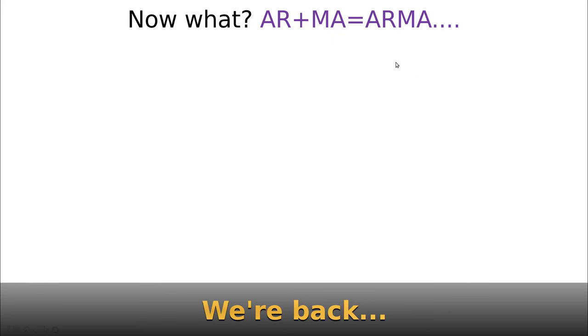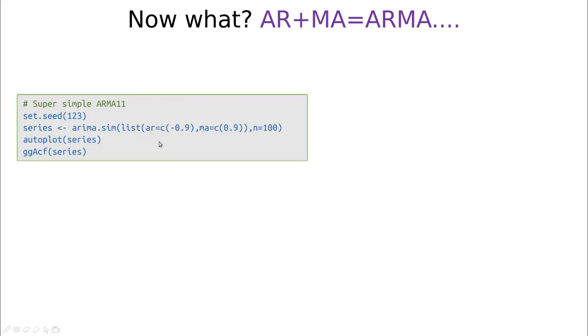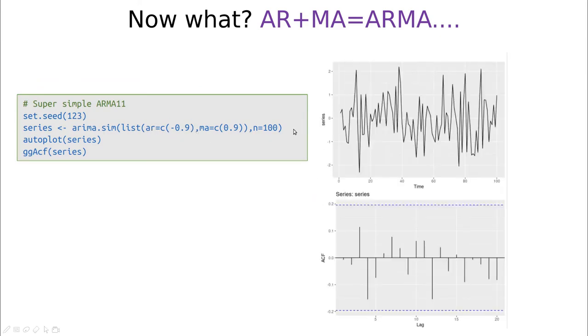Okay, so this is the end of the video. So now what? Now we have AR(p) and MA(q), now we have ARMA(p,q) processes. So they are very simple to simulate. Again, you can use this function, arima.sim, and then you have to specify the coefficients for the AR part and the MA part. And then you see something like this.